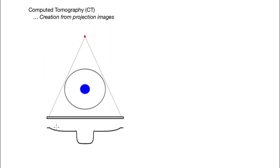Let me draw what the profile looks like. This is a profile of the intensity — high intensity at the edge, goes down. There's a dip in the middle where there's less intensity because of the absorption in this bone.